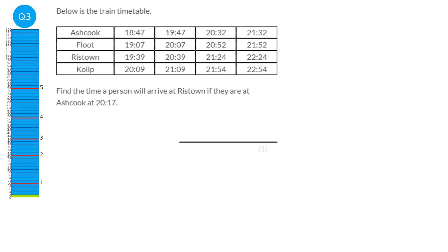This person is at Ashcook at 20:17. So they're going to have missed this train here, and they're going to have missed this train here — so those are off. But they will be in time for this train here. We're looking for the time it hits Risedown. So it will get to Flute at 20:52, and then Risedown will be at 21:24.